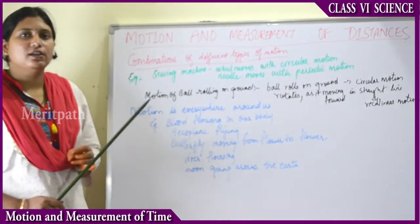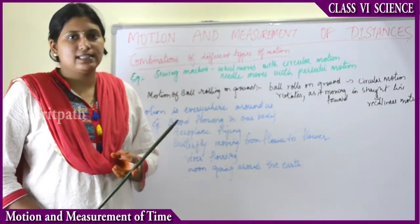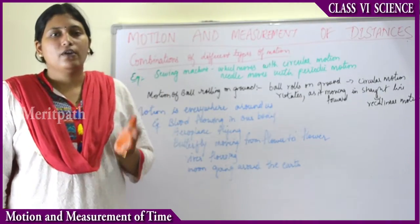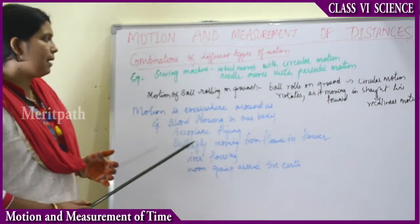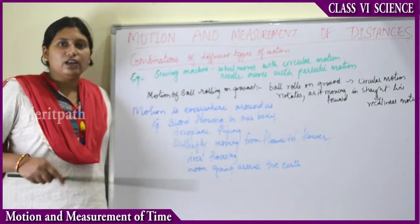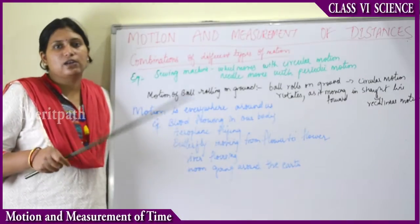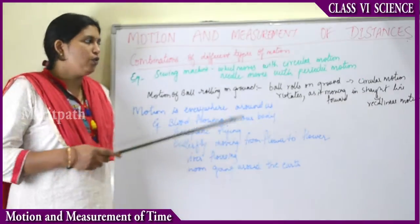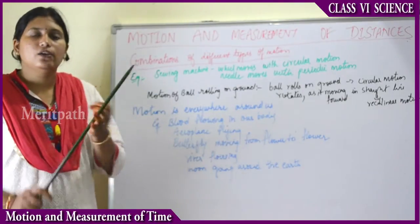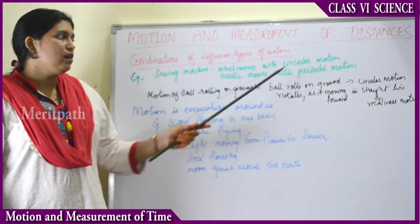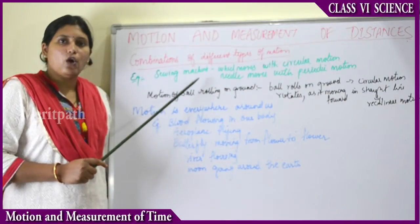Some objects exhibit a combination of two motions. For example, in a sewing machine, the wheel of the machine rotates in a round direction — that is circular motion — whereas the needle which stitches the clothes moves to and fro — that is periodic motion. So in one sewing machine there is a combination of two different types of motions: circular motion and periodic motion.